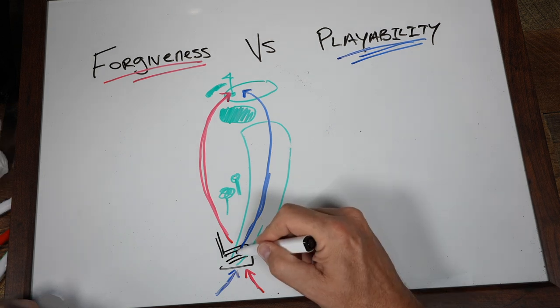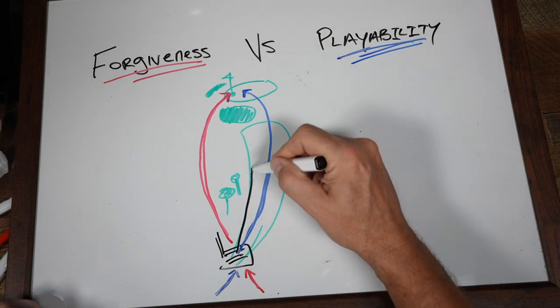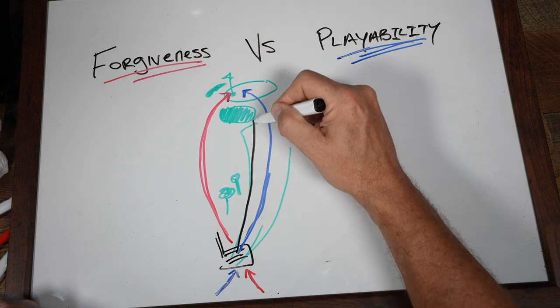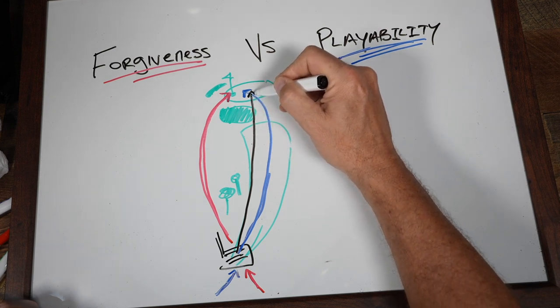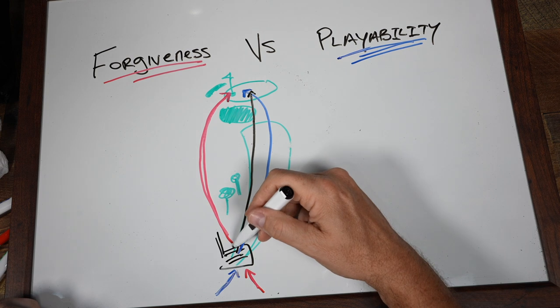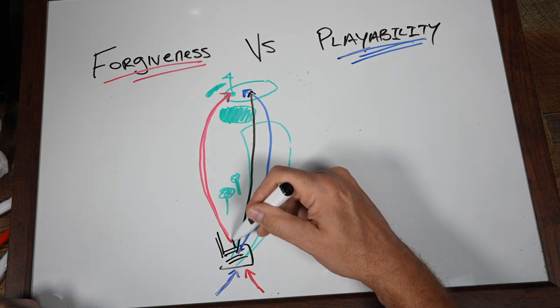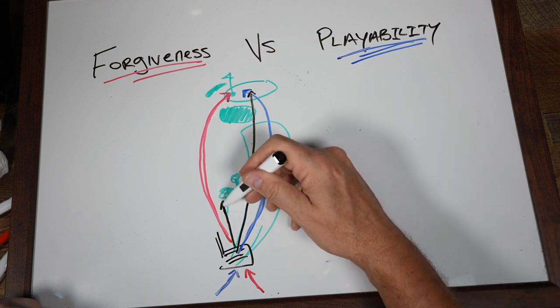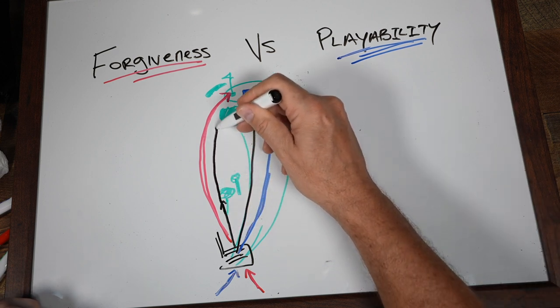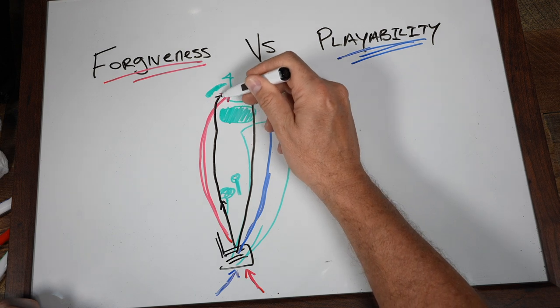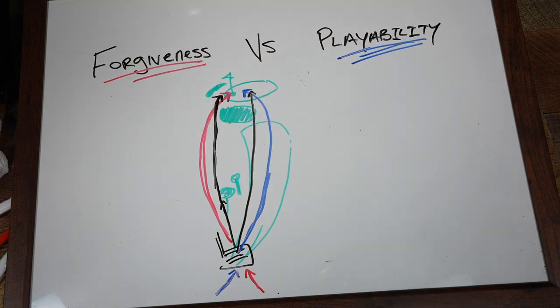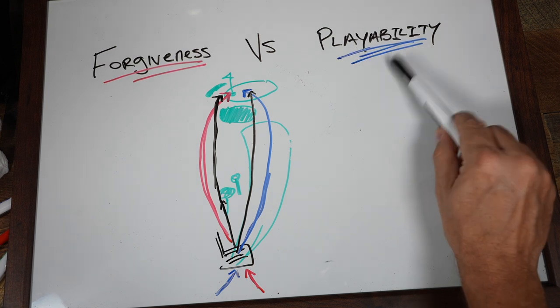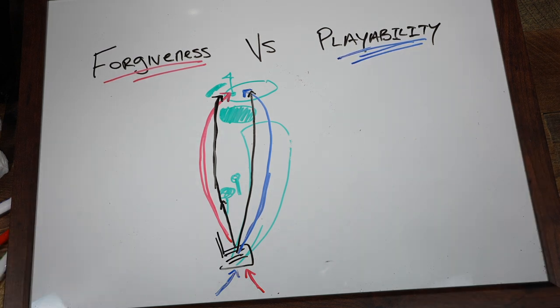A forgiving club may give you a little bit of workability, but it's probably going to be kind of lacking. Let's say we end up here, we take that same fade swing and maybe we even hit the trees because we can't quite wrap it around. Or if we do just scoot by, it's just not going to curve back the way we want it. That's the difference between a club that's workable and a club that's more forgiving.